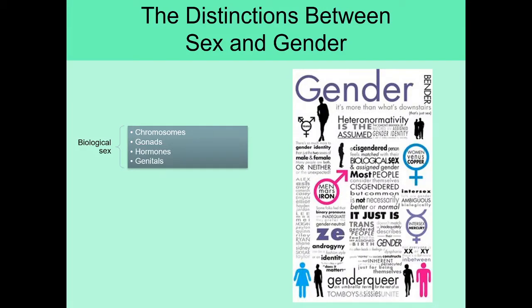If we distinguish between the word sex, which is a biological term, and the word gender, which is a socialized term, we see that there are different factors being included under those two headings. Biological sex is going to be determined by one's chromosomes, what type of gonads they have, what hormones predominate in their bloodstream, and what type of genitals they have.